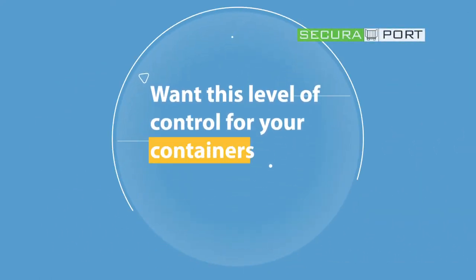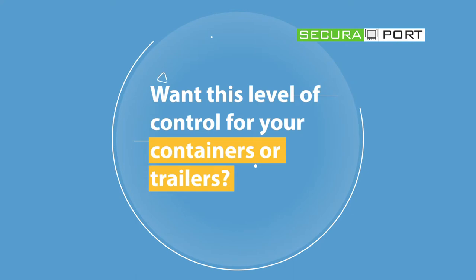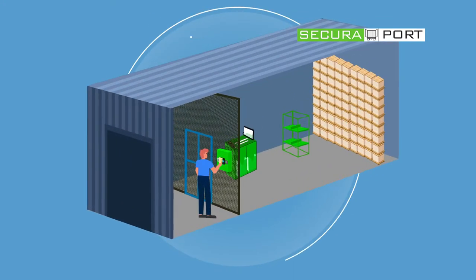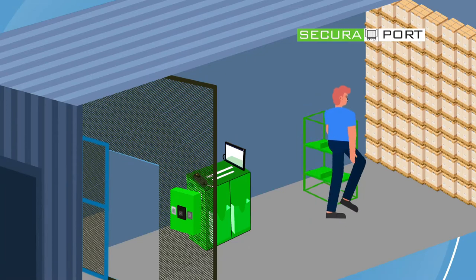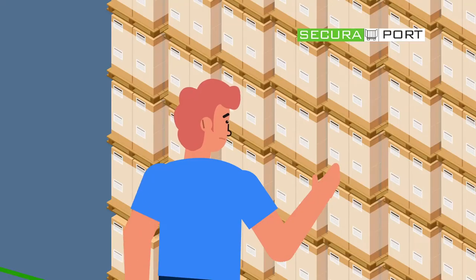Want this level of control for your containers and trailers? SecuraPort adds universal fit gate and fencing to SecuraCrib. The result? Your ability to convert containers into automated inventory storerooms as well.